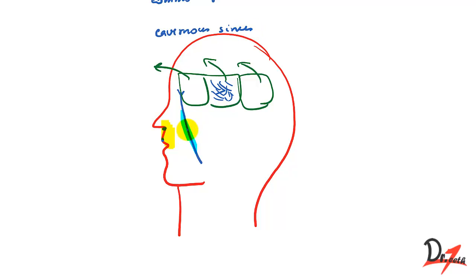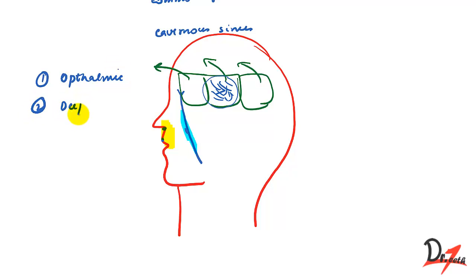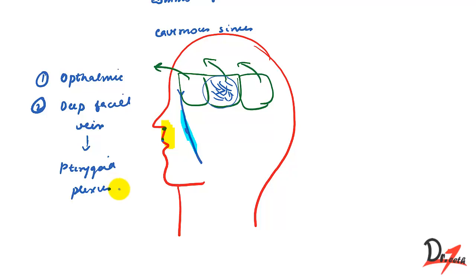The facial vein communicates with this cavernous sinus via two roots. The first is through the ophthalmic vein (also called the angular vein), and the second is through the deep facial vein. The deep facial vein first joins with the pterygoid plexus of veins, which then further communicates with the cavernous sinus.